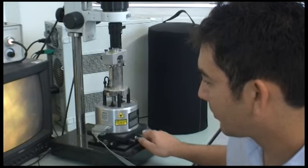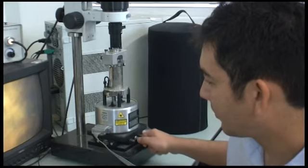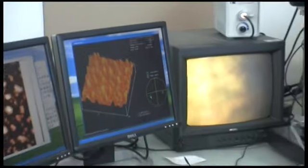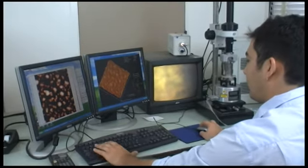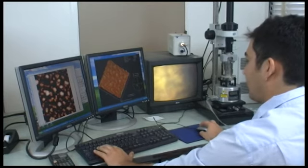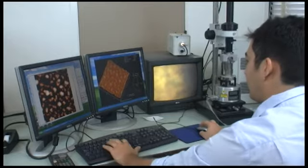This is an atomic force microscope. Michael is looking at the surface morphology of a sample of gold nano-islands. The atomic force microscope gives us a 3D view of the sample by moving a tiny probe over the surface. The picture you are looking at is only one millionth of a meter wide.